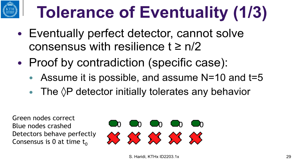The following result holds: an eventually perfect failure detector cannot solve consensus with resilience t equal to or greater than half of the number of processes. We are now giving bounds on the number of processes that can fail. In the fail-stop model with a perfect failure detector, we could tolerate up to n minus one process failures. What we are saying is t can only be a minority of processes — at least it cannot be half or more than the number of processes in the system.